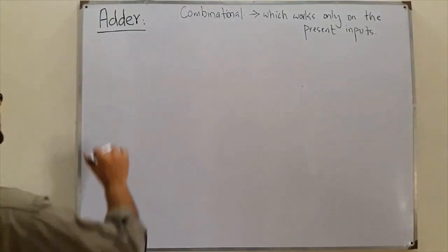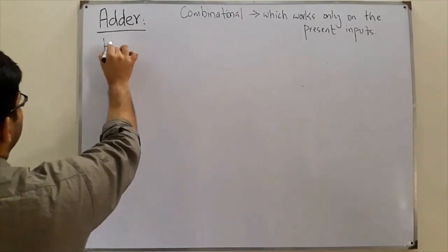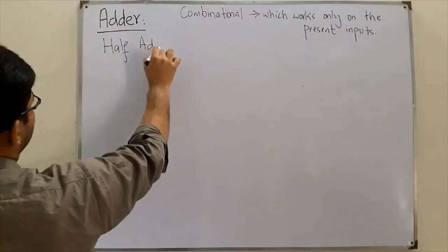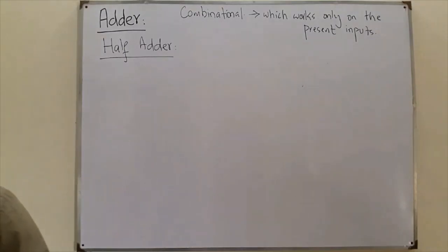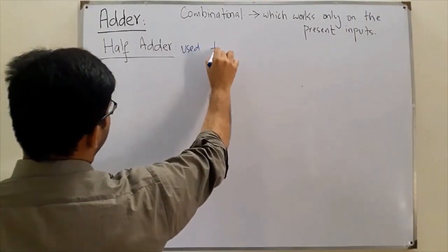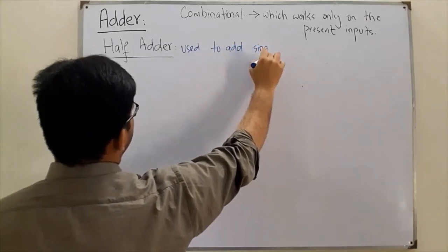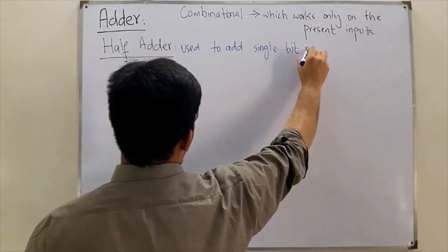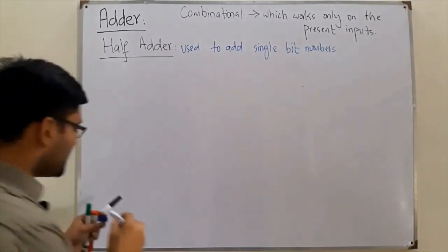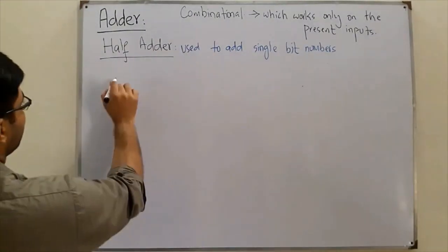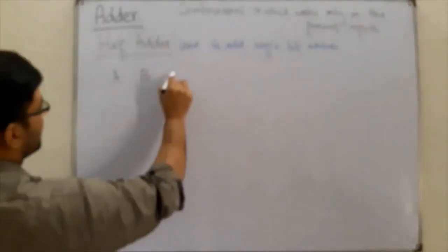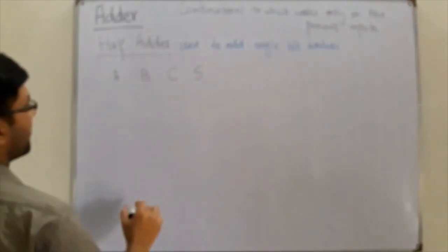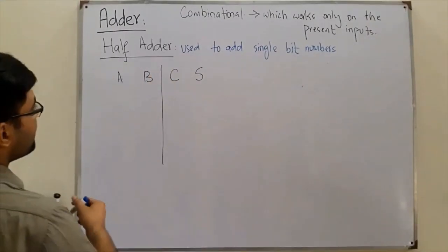The adder adds bits, and we have two types of adders. The first is the half adder. The half adder is used to add only single-bit numbers. Let's say we have two single-bit numbers A and B. While adding numbers we can have a carry and a sum.